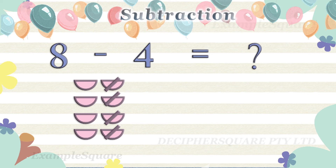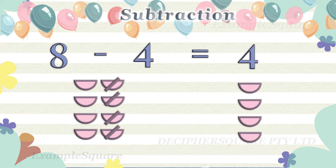If four semicircle shapes are taken away from eight semicircle shapes then four semicircle shapes are left. Eight minus four equals four.